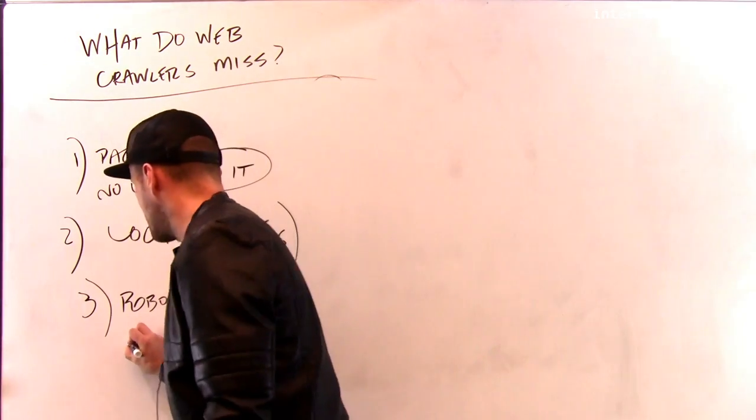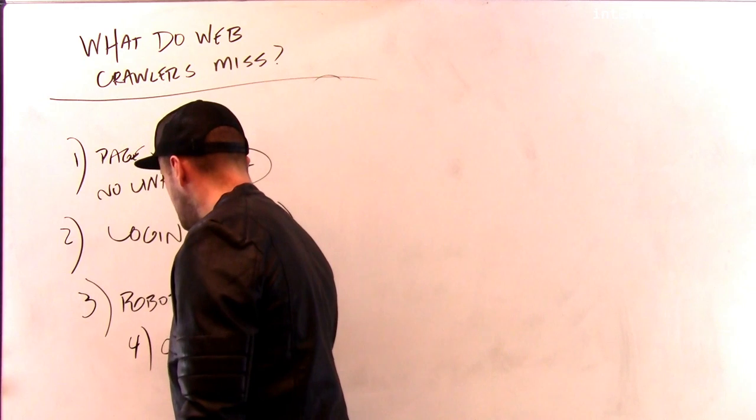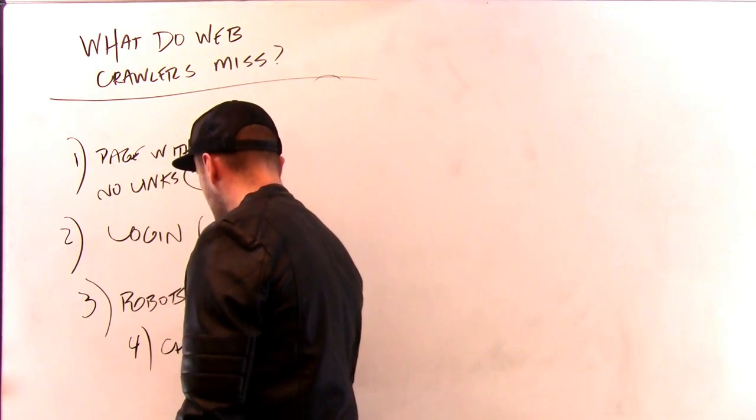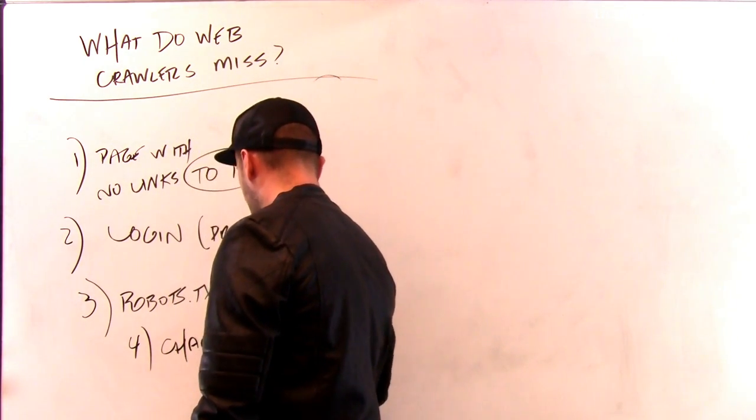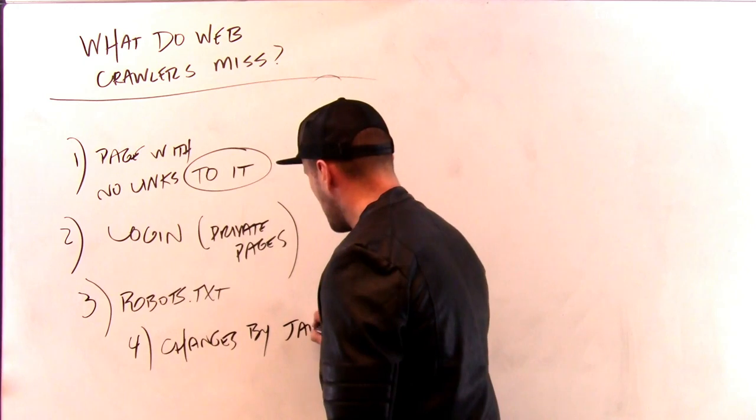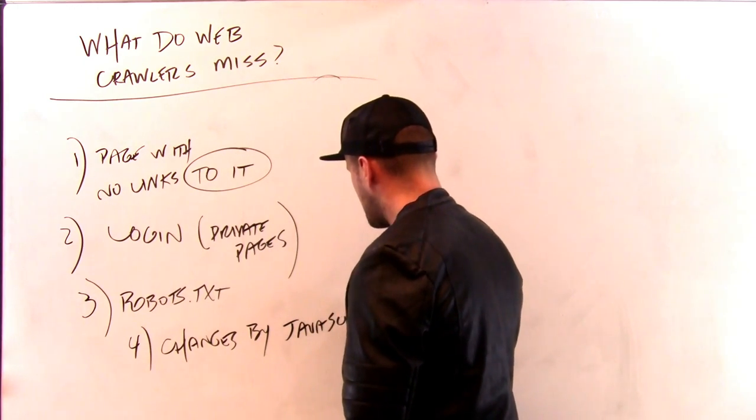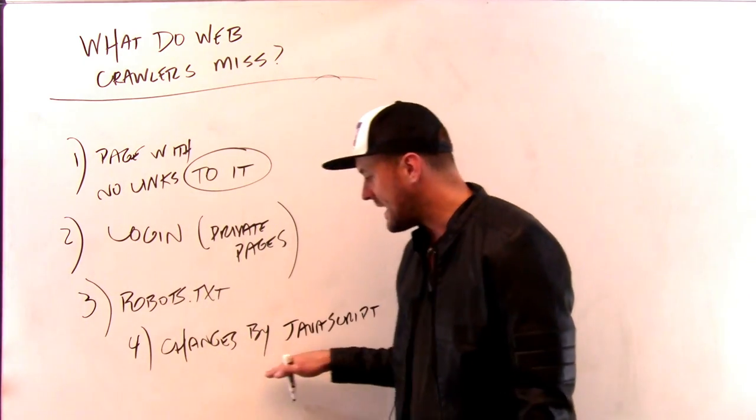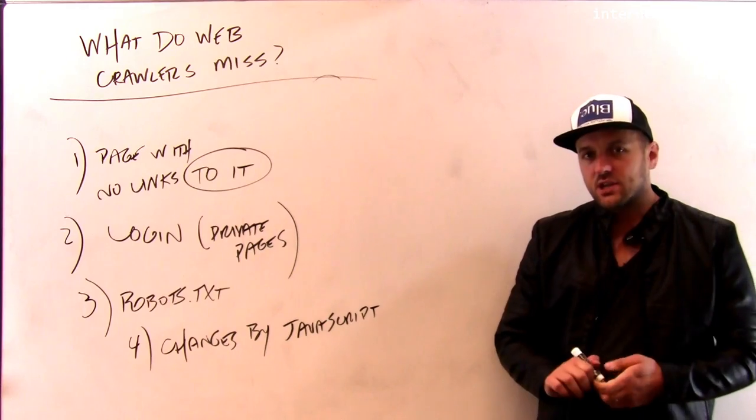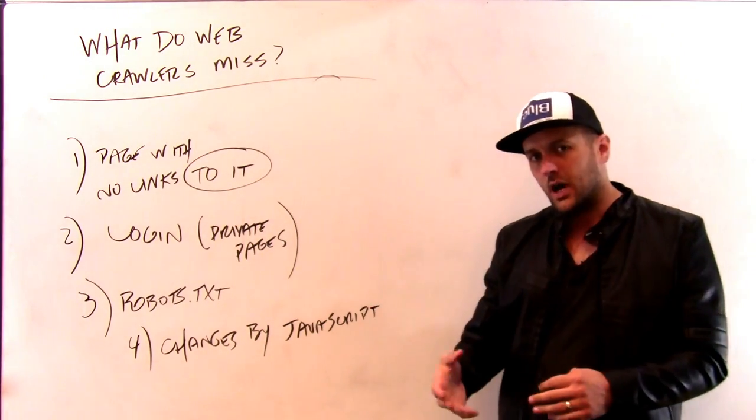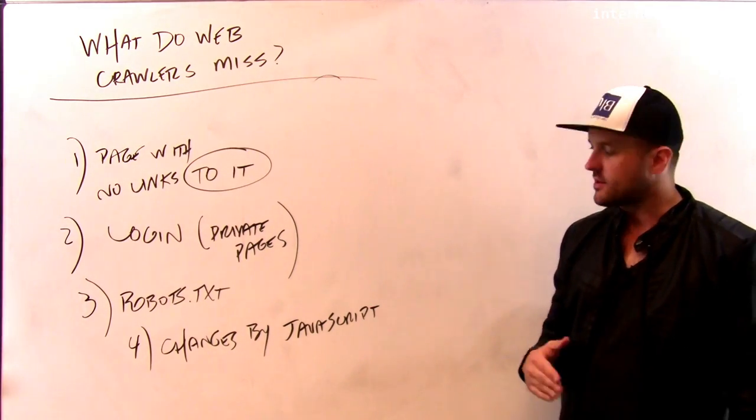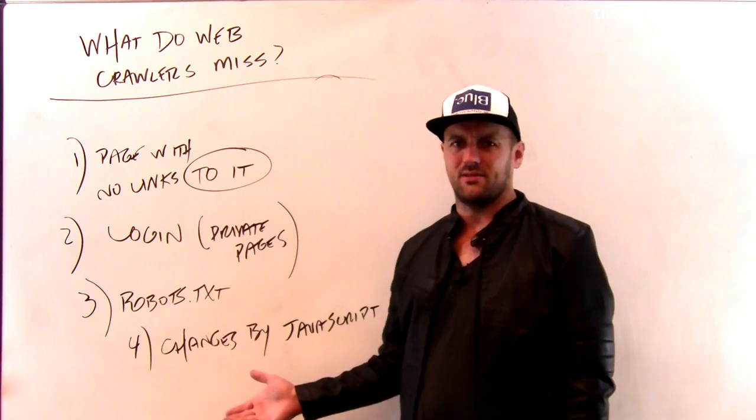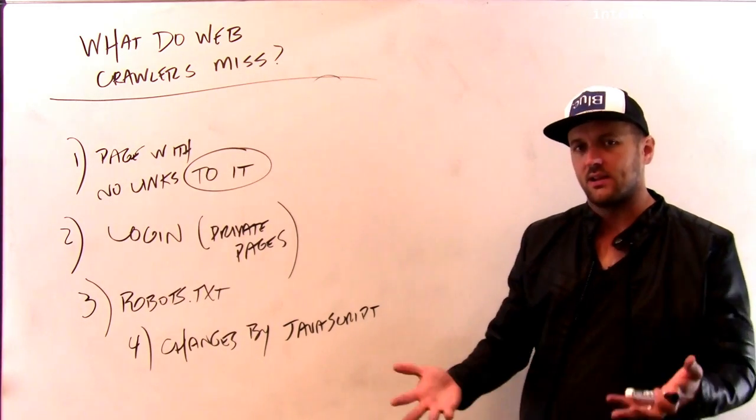The last thing that robots will miss are any changes made by JavaScript. And so this is sort of interesting because the robots only typically fetch the source of the page. So remember, the page comes not only with an HTML source, but also with some JavaScript that runs when the page loads. But the robots don't run JavaScript. They just fetch the page sources and analyze the source.